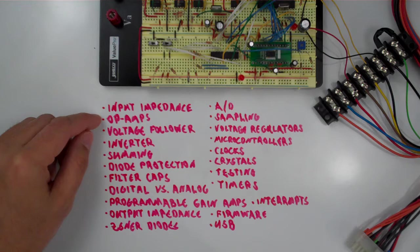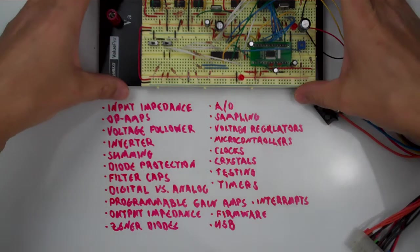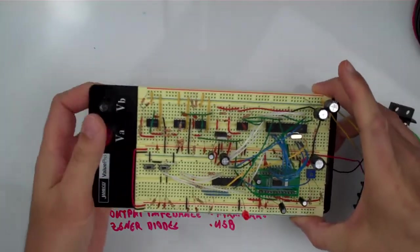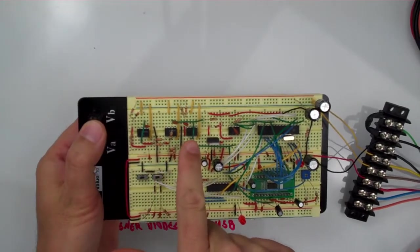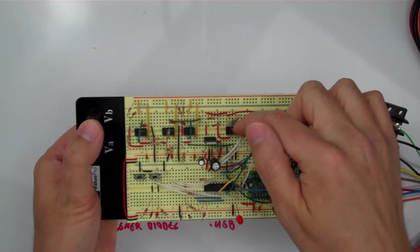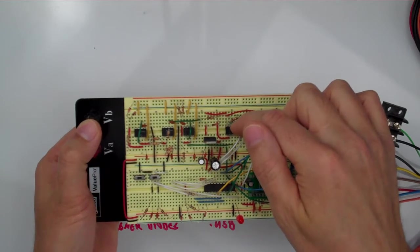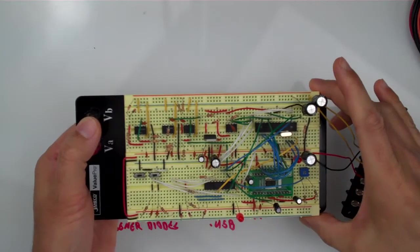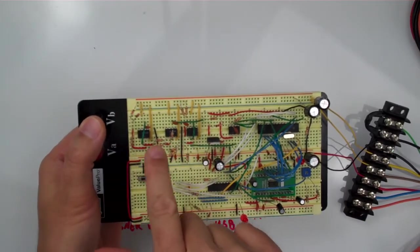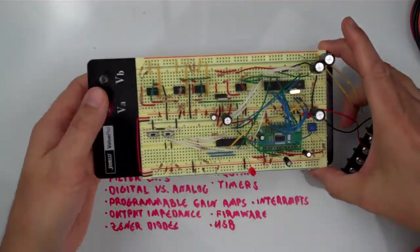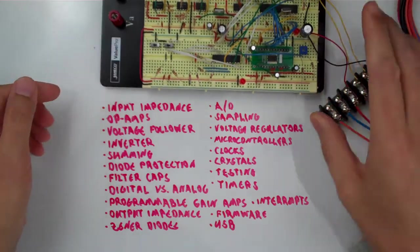We'll also be learning a lot about op amps. The circuit actually makes use of three op amps right in the very beginning. And this one over here is similar to an op amp. It's actually a programmable gain amplifier. But we've got three very basic op amps right in the very beginning. So we're going to be learning a lot about operational amplifiers.